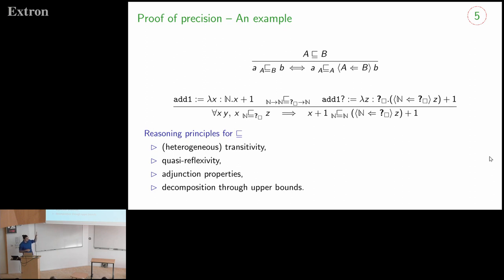So we have various reasoning principles to build such precision relations, some transitivity, quasi-reflexivity, the adjunction properties such as the rule above, and some decomposition properties. The important point is that we don't want to have this counterexample of omega in this language. So in particular, we cannot have the fact that unknown to unknown is less precise than unknown. This means that we cannot have unknown being maximal everywhere.